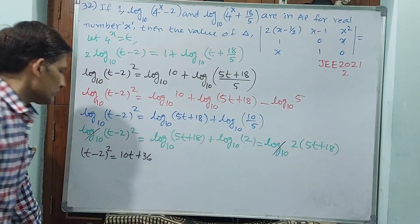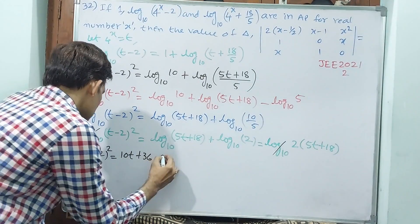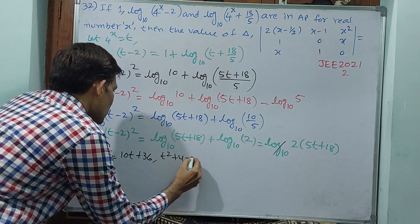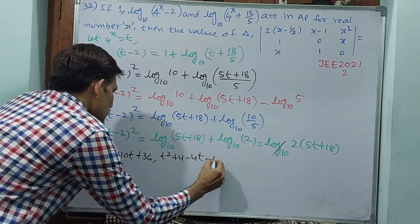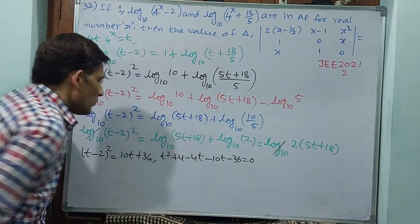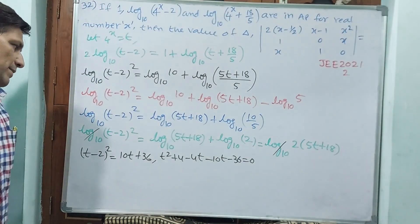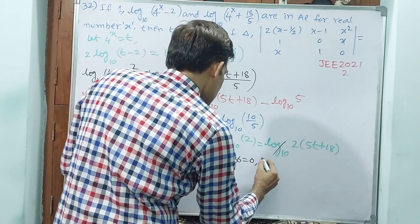Okay, write on them: t² + 4 - 4t - 10t - 36 = 0. These also I have sent that side. Now this equation: t² - 14t - 32 = 0.